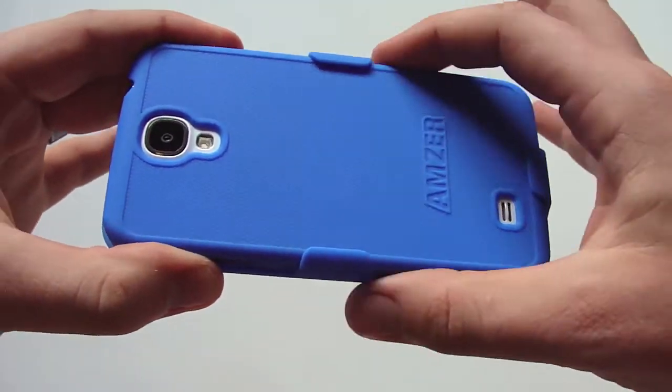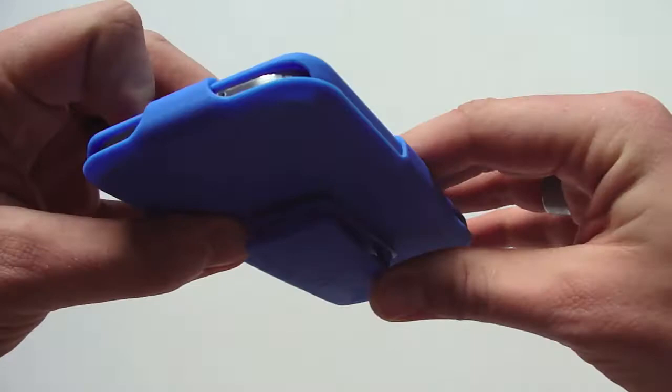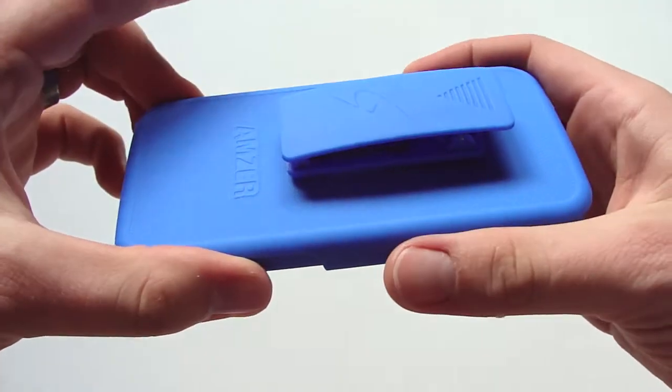You get three latches here to help keep it in place, and it still gives you that thin profile, so if you want to put this on your belt clip, you're not going to have much sticking out, which I really like that aspect of it already.